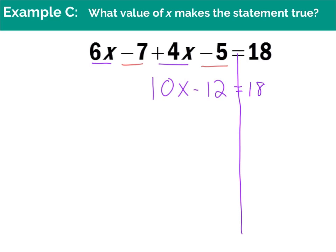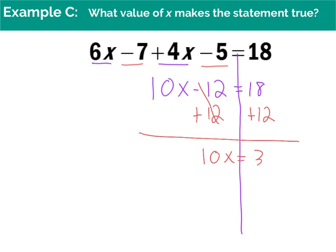I need to eliminate the constant, which is negative 12. The opposite of minus 12 is positive 12, so I add 12 to both sides. Positive 12 and negative 12 cancel, leaving 10x on one side. Positive 12 and positive 18 add together to give me 30. Now I divide both sides by 10 to get rid of the 10 in front of x. 10 divided by 10 is 1x, and 30 divided by 10 is 3. So my final answer is x = 3.